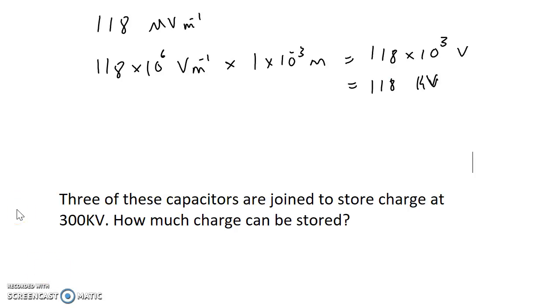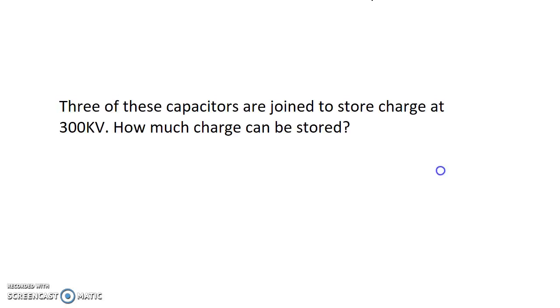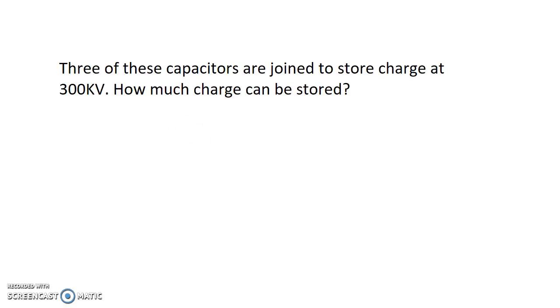The question doesn't actually mention what configuration that is, but there's only going to be one configuration for which none of the capacitors are going to be exposed to an overvoltage. And that's when the three capacitors are joined in series. So if we put a series combination of the three capacitors, connect them up to our 300 kilovolt source...